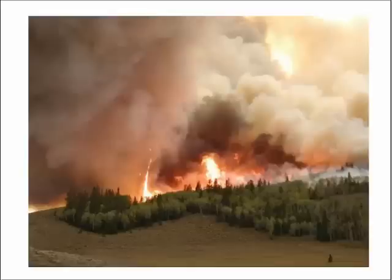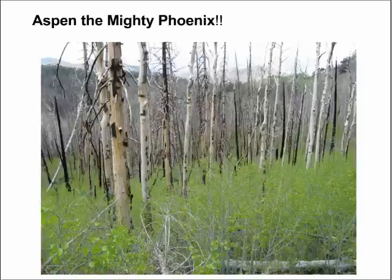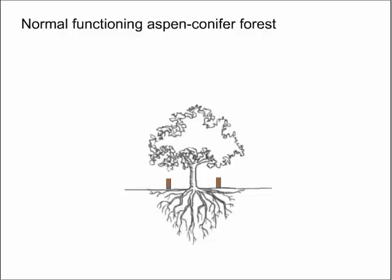Over time, the shade-tolerant conifers grow rapidly and then begin to compete with the Aspen, which can create a lot of mortality. An ecological driver that balances out this relationship is fire — as the conifers grow and begin to overtop the Aspen, creating mortality that increases the flammability of the stands. At some point a fire will occur, the conifers — which are very flammable — burn, and following fire the Aspen root system will regenerate and start the cycle over again.